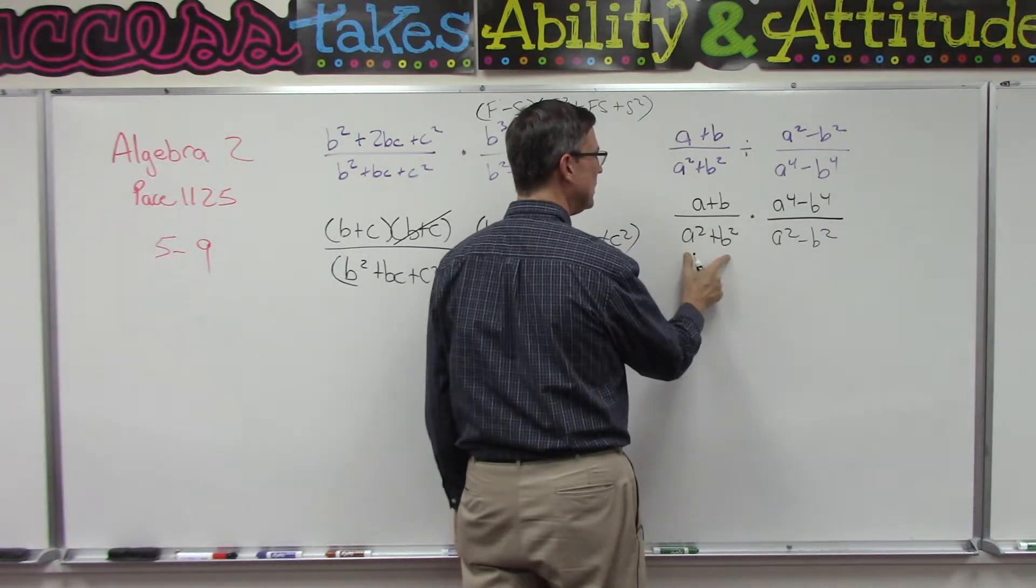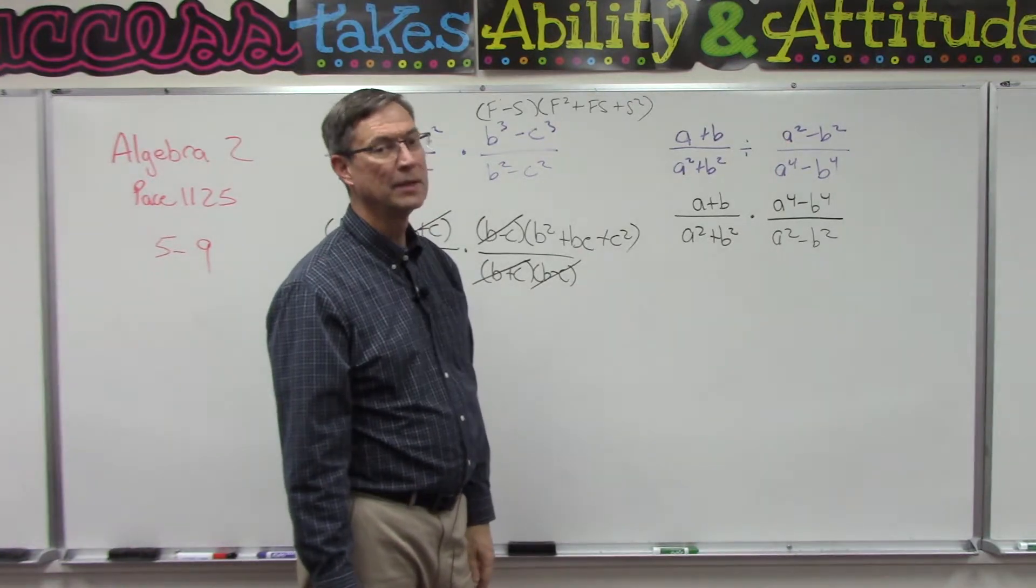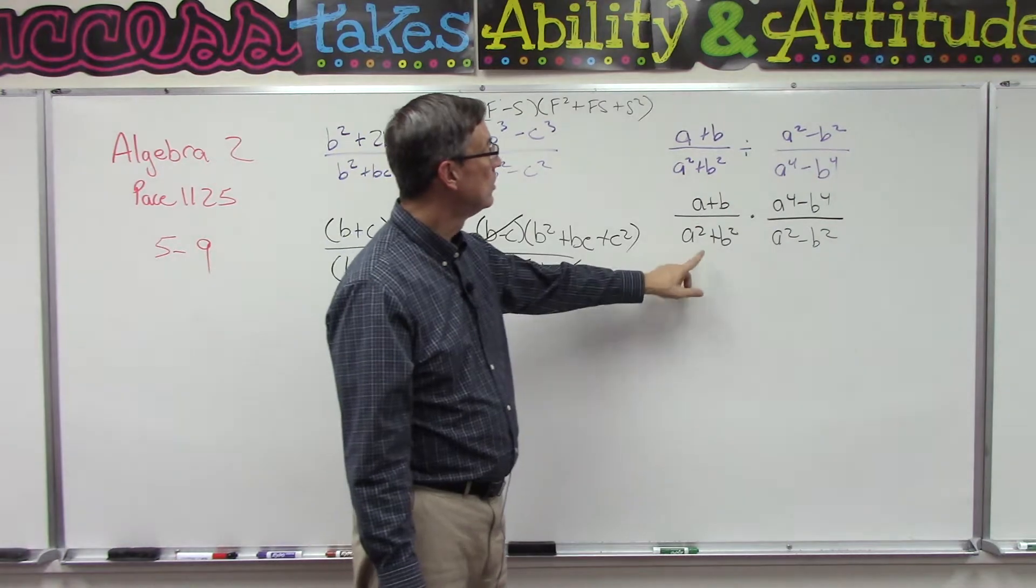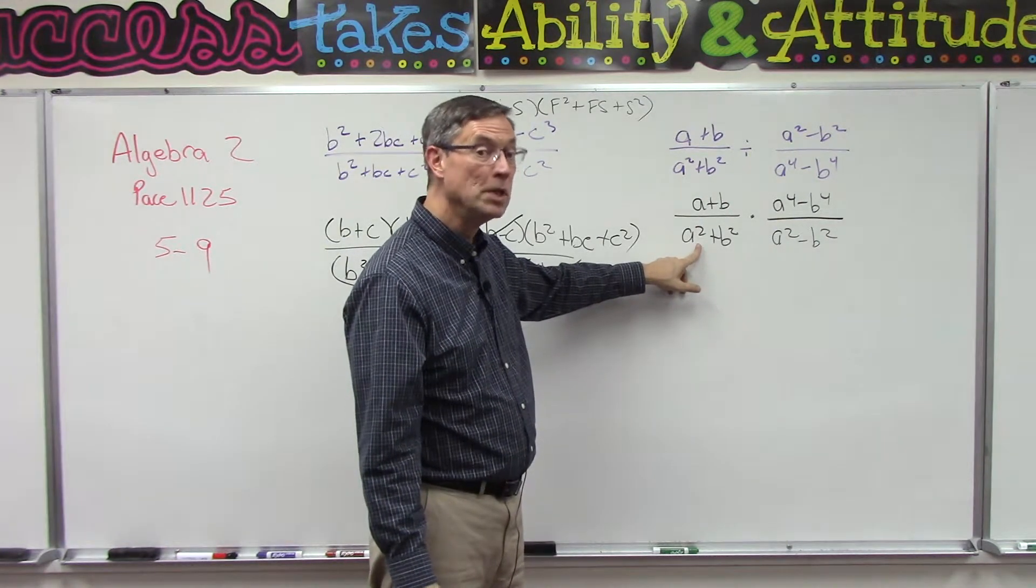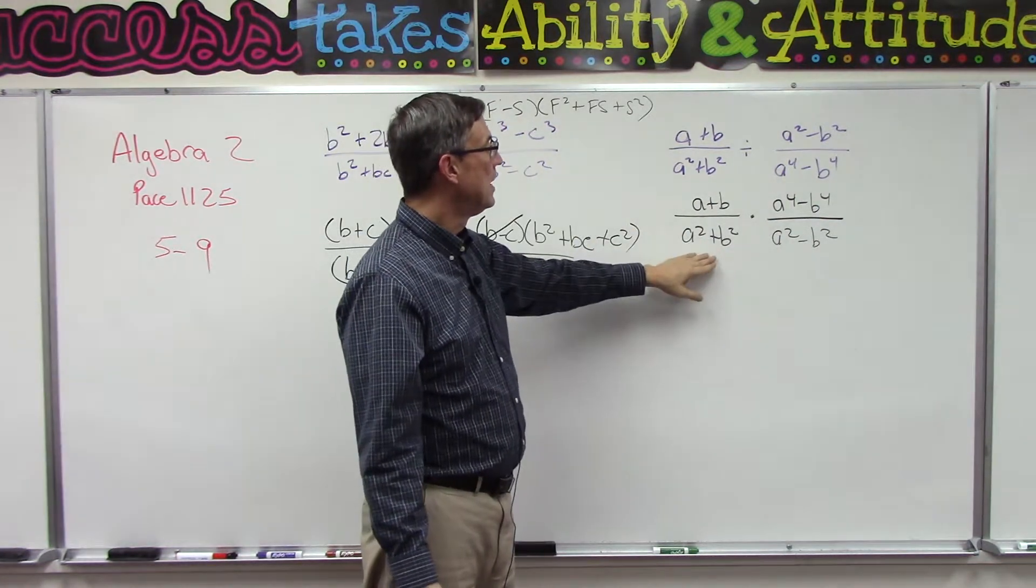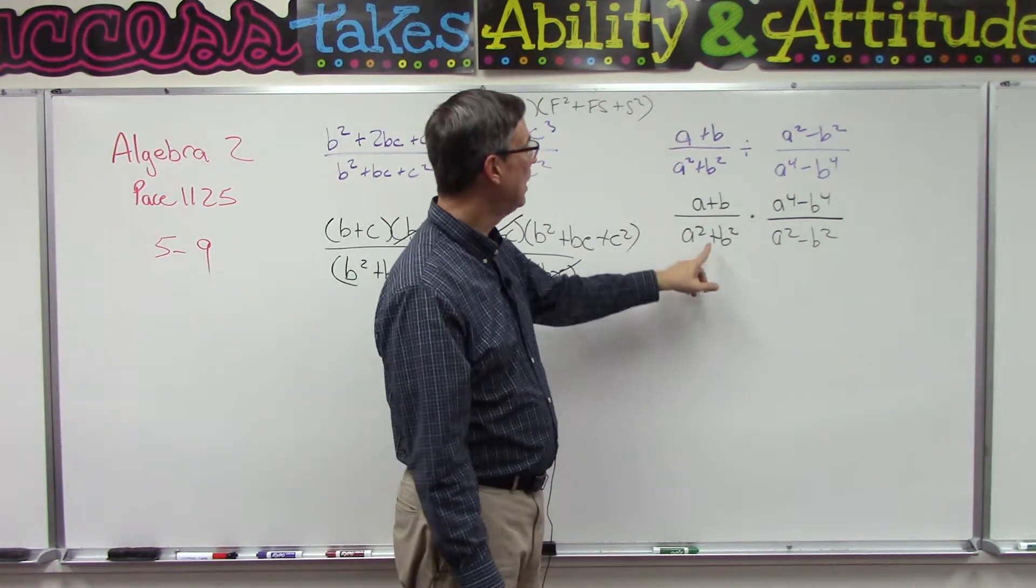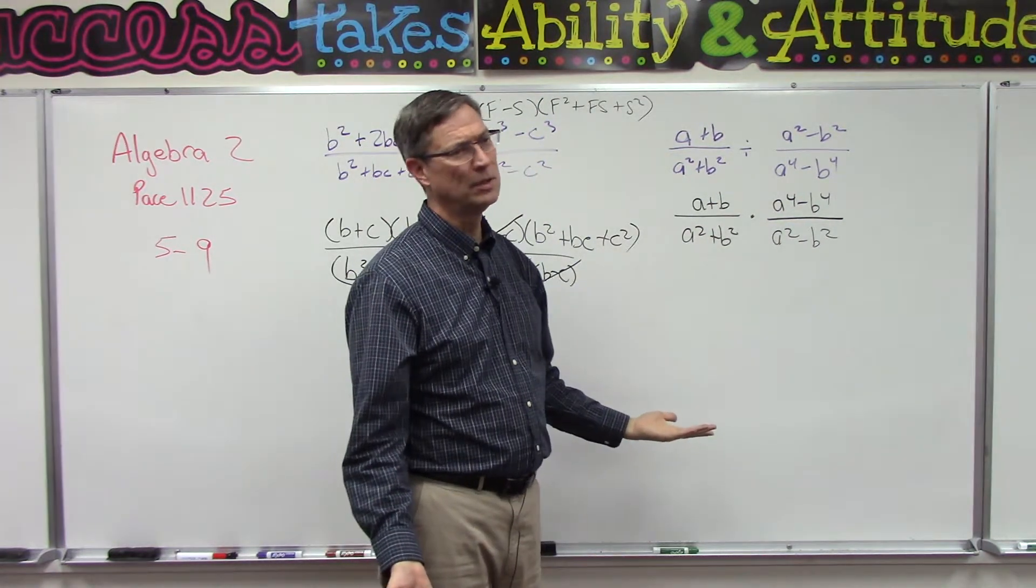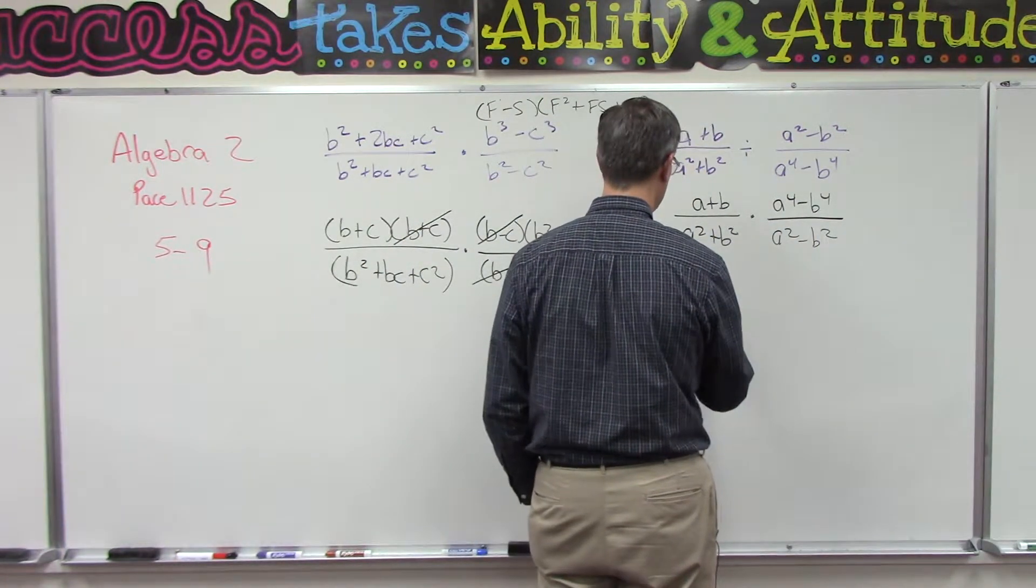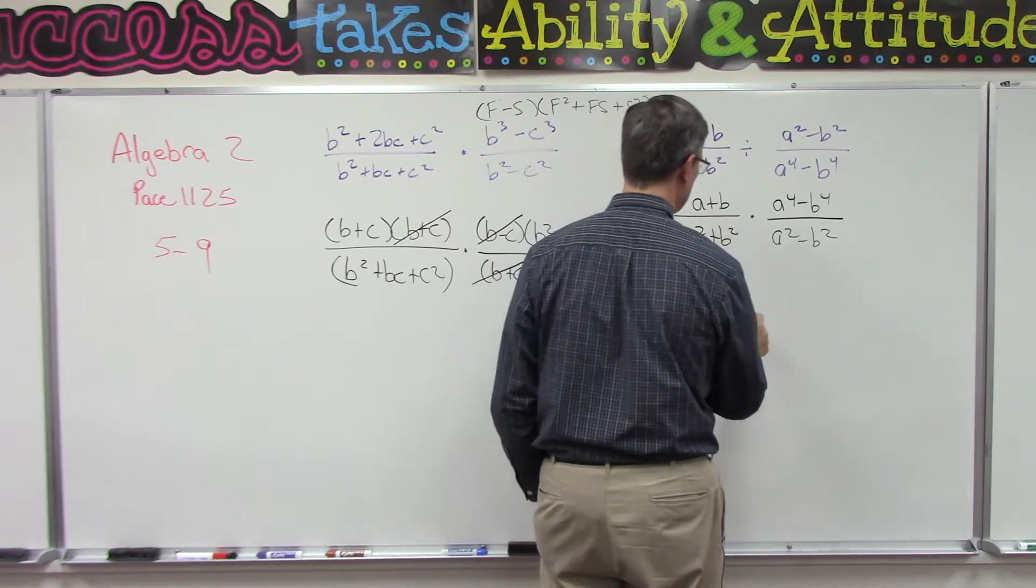Now let's factor these. Can we factor this a² + b²? Actually no, we can't. We can factor the sum of perfect cubes - okay, if this was a³ and b³ we could follow a pattern. If it's squared and we can factor that, but when it's plus we can't, have to leave it. So let's look over here at this part. I'm going to leave this over a² + b².